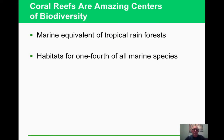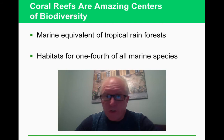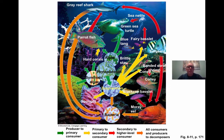Coral reefs are similar to rainforests — one fourth of all marine species are found at the coral reefs, so that's a lot. Here's an idea of some of the food chains going on at the coral reefs — you can see there is a lot going on there. Phytoplankton start the food chain as the producers. That's a pretty good description of it all.